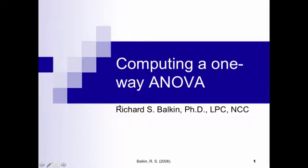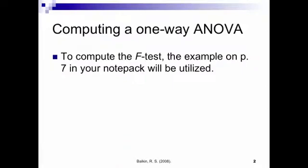Here we're going to take a look at computing a one-way ANOVA. We're going to learn how to do this by hand, and the reason I focus on hand computations is I think it's always good that you can see where the numbers are coming from. That way when you're running information in SPSS and analyzing data, you have an idea of what to expect. The example I'm going to go through in this lecture is also the same example that's in your note pack, which you can download from my website.